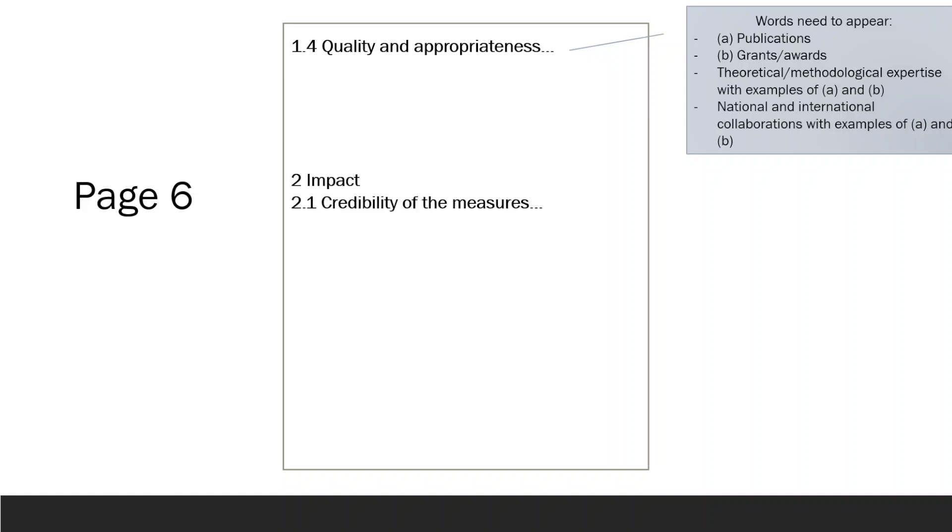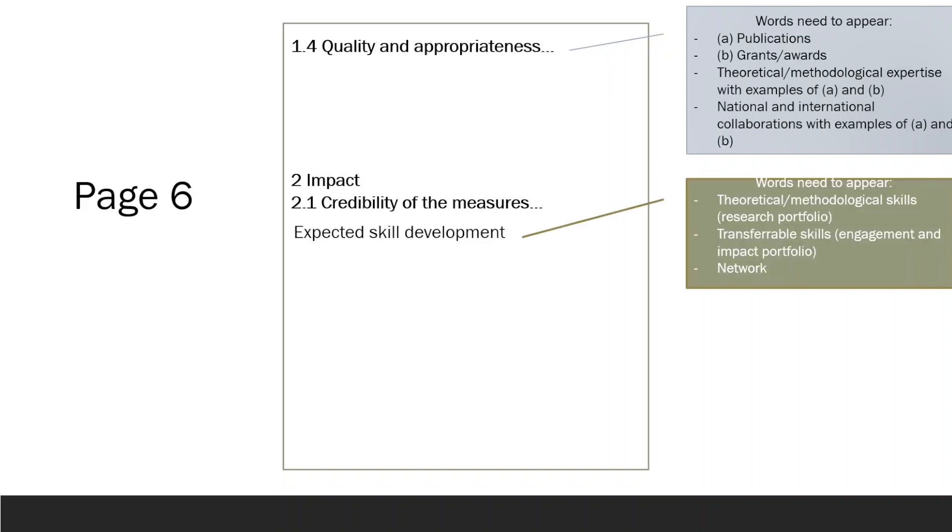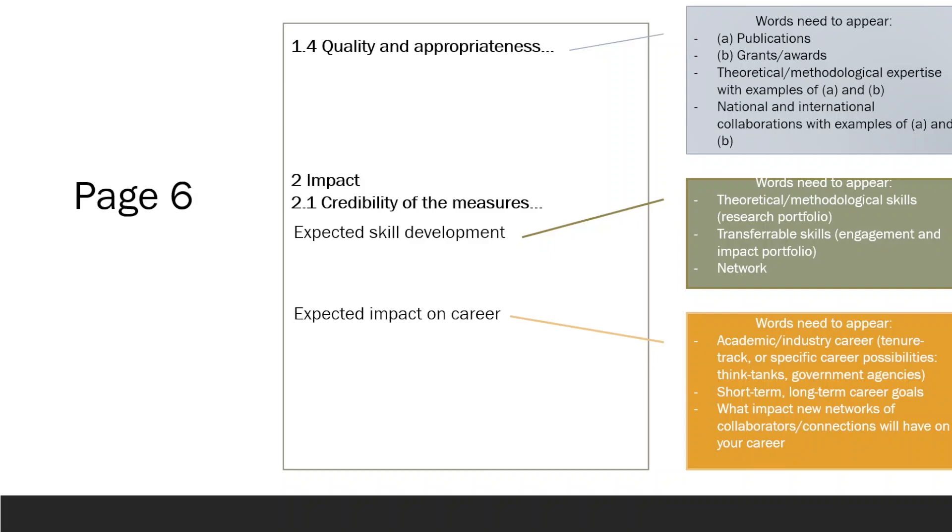The remaining portion of the page can be dedicated to Part 2.1, Credibility of the measures to enhance the career perspectives and employability of the researcher and contribution to his or her skills development. In the subsequent sections, describe how your theoretical and methodological skills will help you build your research portfolio and how your horizontal and transferable skills will contribute to creating your engagement and impact portfolio. Emphasize how your fellowship will enable you to expand your network. Then, explain how these portfolios and networks will support your short-term and long-term career goals.